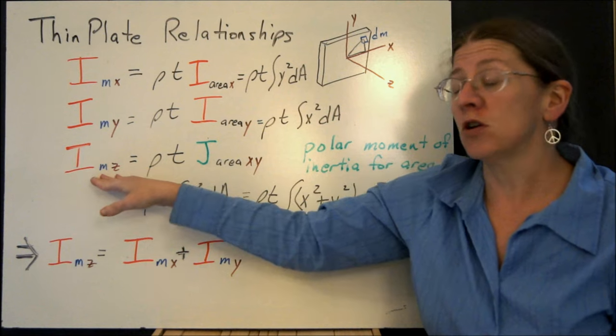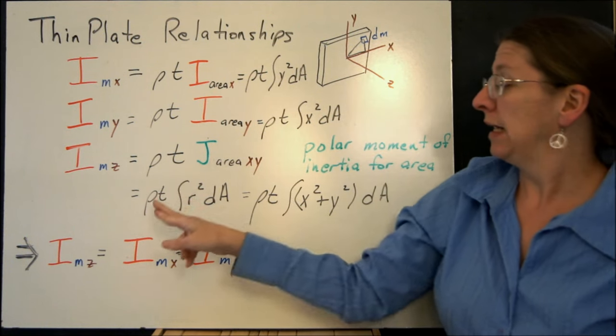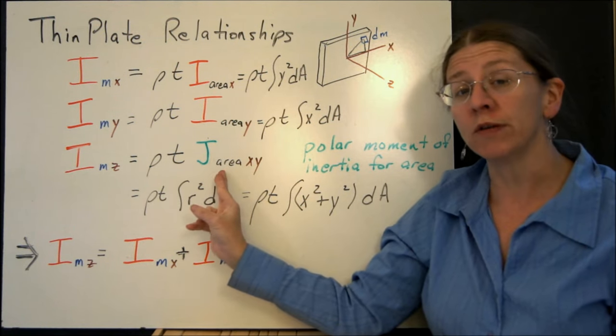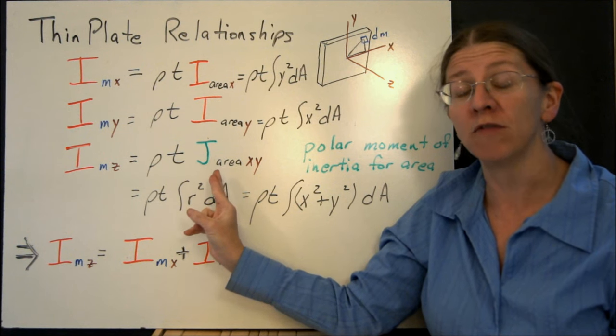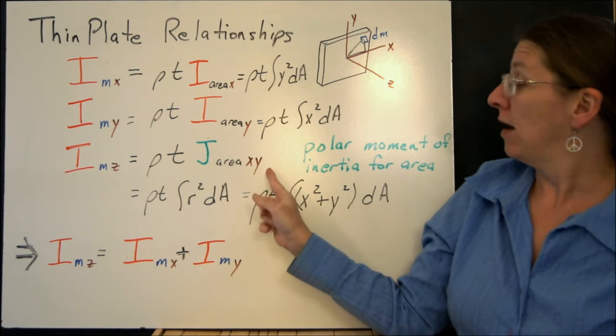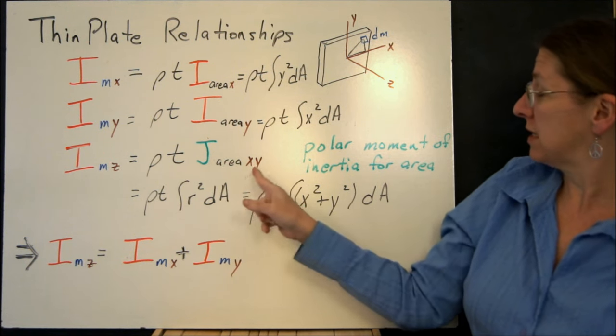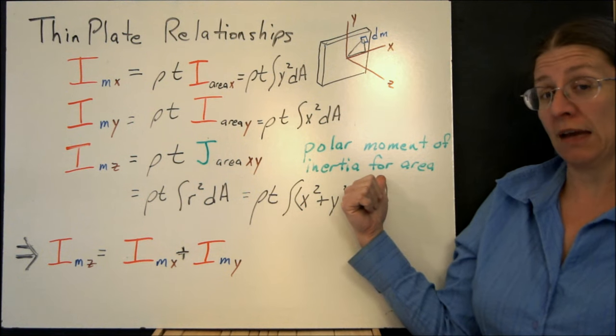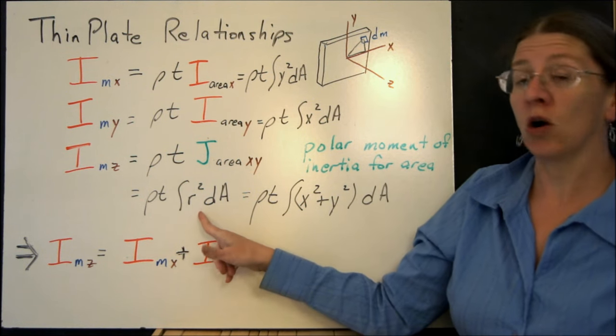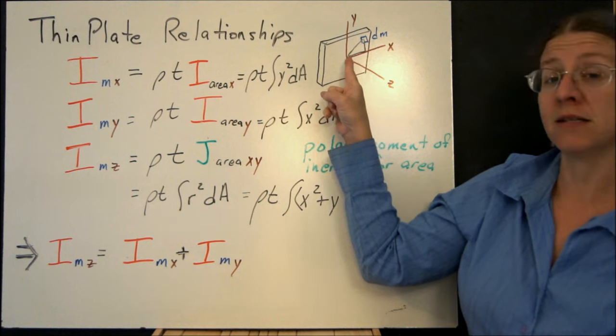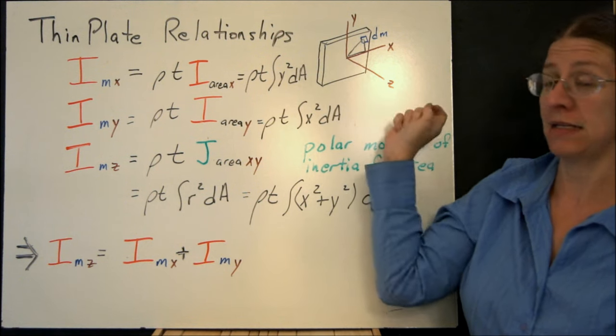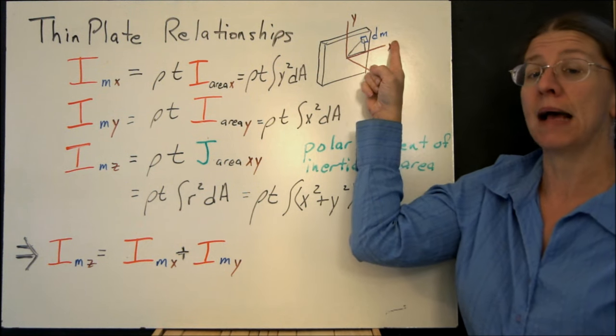The mass moment of inertia about that third axis, about the z-axis, is ρt times the polar moment of the area in the x-y. So this is J. That's what we had before. J is the integral of r² dA, so it's the distance away from this z-axis that this particular differential mass sits.